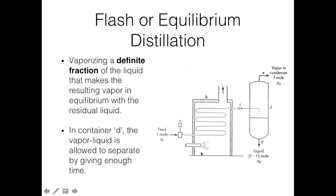The second method is the flash or equilibrium distillation. In this process, we vaporize a definite fraction of the liquid such that the resulting vapor is in equilibrium with the residual liquid. A set temperature is used to vaporize a defined amount of the mixture to separate the two components. The unit is fed with the two-component mixture, which is vaporized and moves into a coil, exiting into container D in vapor form, where it is cooled to separate the vapor mixture into liquid and gas.